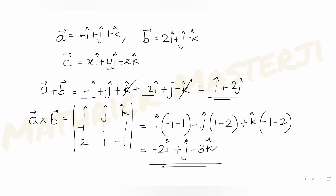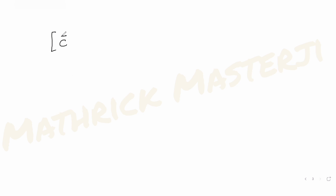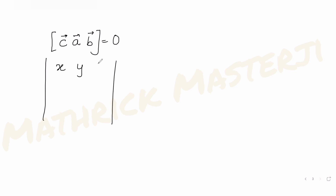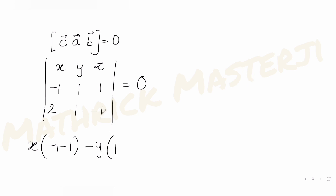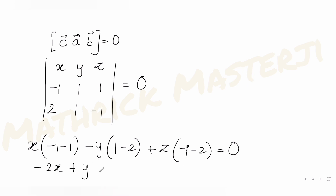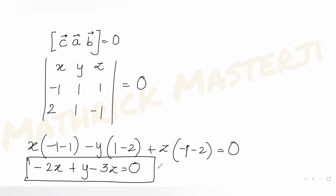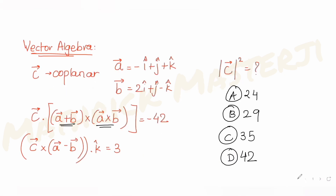Since c is coplanar with a and b, the scalar triple product equals zero — that is, the determinant of the coefficients of c (x, y, z), a (−1, 1, 1), and b (2, 1, −1) equals zero. Expanding gives minus 2x plus y minus 3z equals 0. This is Equation 1.